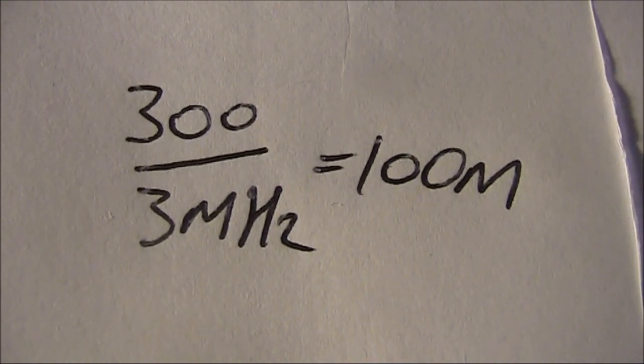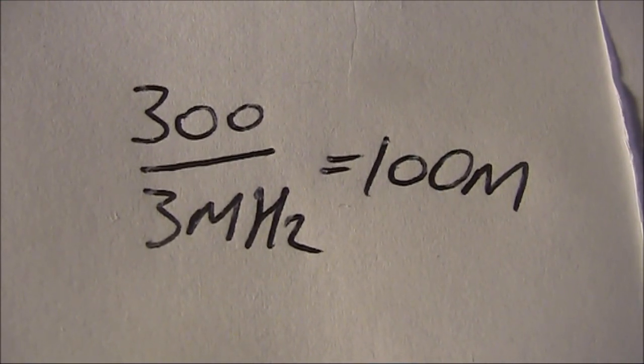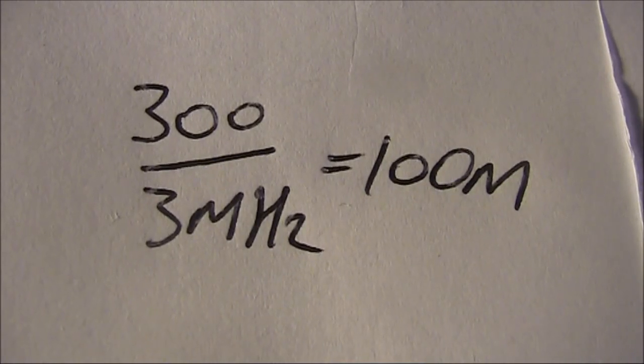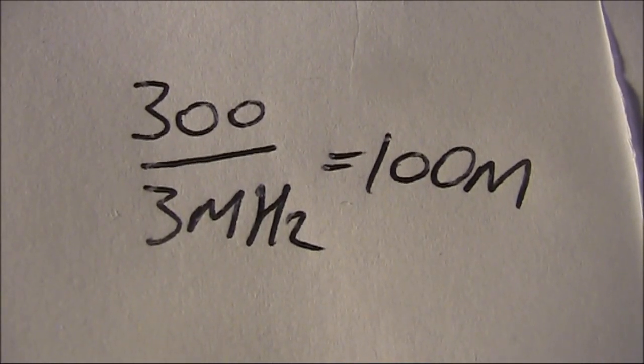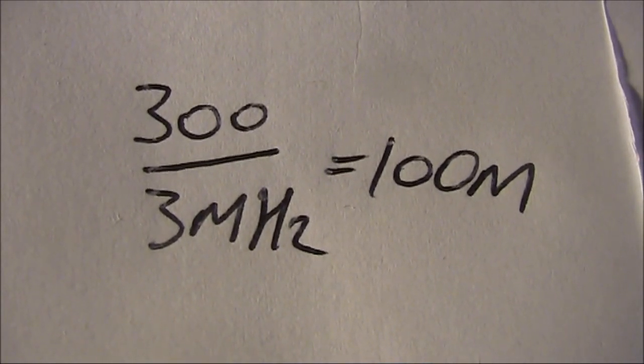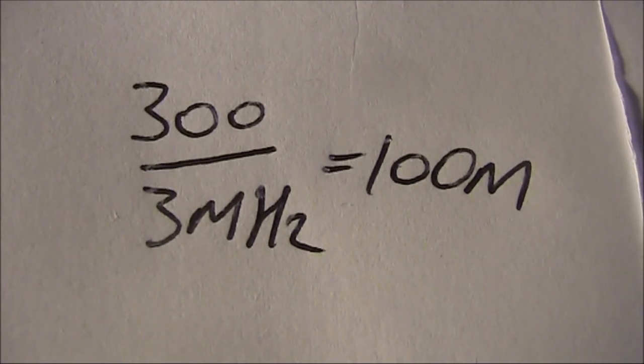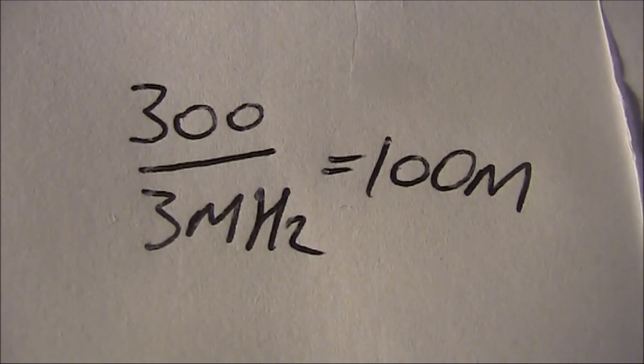What is significant about 3 MHz as we saw on the dip? Actually quite a lot. 300 divided by 3 MHz, and this is how you get the wavelength of a radio frequency in meters, is 100 meters.